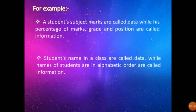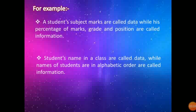For example, a student's subject marks are called Data, while his percentage of marks, grade, and position are called Information. Second example: students' names in a class are called Data, while names of students arranged in alphabetical order are called Information. Understood? What is Data and Information with examples?